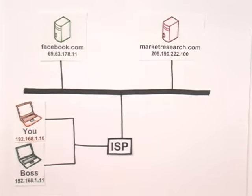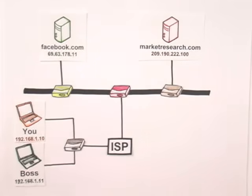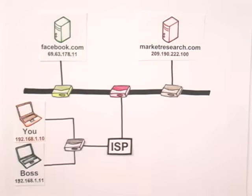The solution to that problem is IP addresses and routers. Everything connected directly or indirectly to the internet has an IP address — everything. That includes your computer, servers, cell phones, and all of the equipment in between. Anywhere two or more parts of the internet intersect, there's a piece of equipment called a router. Routers direct your packets around the internet, helping each packet get one step closer to its destination. Every time you visit a website, upwards of 10 to 15 routers may help your packets find their way to and from your computer.